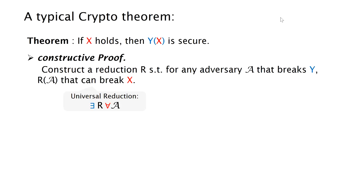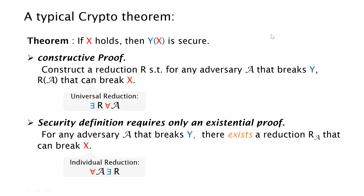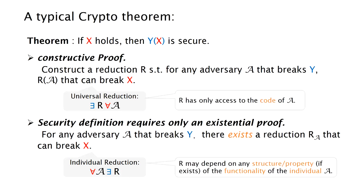However, for most security definitions it switches to qualifiers and requires only an existential proof. That is, we just need to show that for every adversary A, there exists a reduction R.